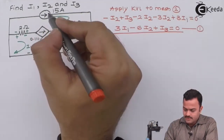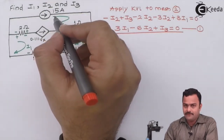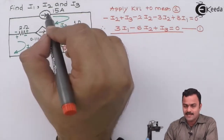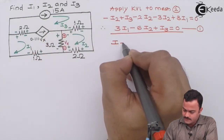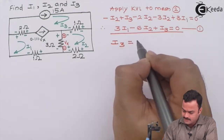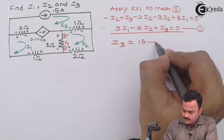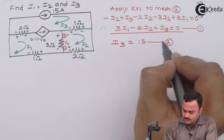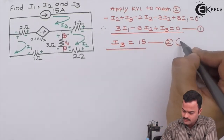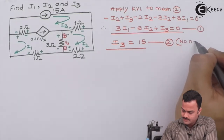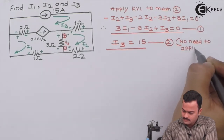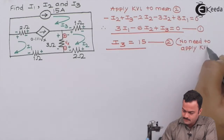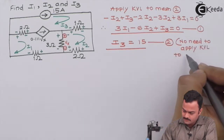Moving to mesh three — we are lucky because the current source is present only in that particular mesh. This allows us to write the equation directly as i3 = 15, as equation number two. Since the current source is present in loop three, there is no need to apply KVL to mesh three.